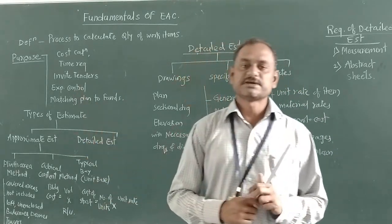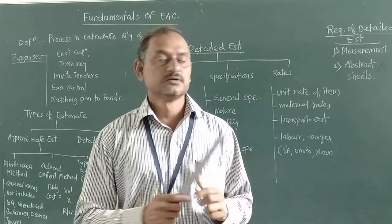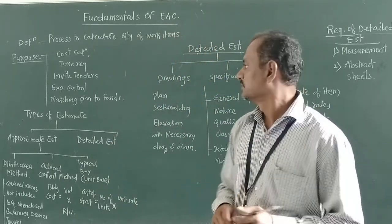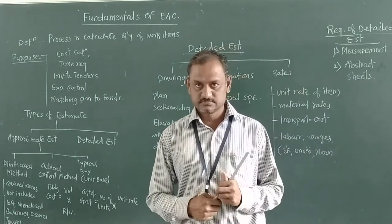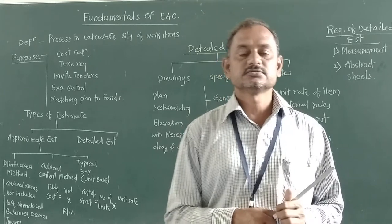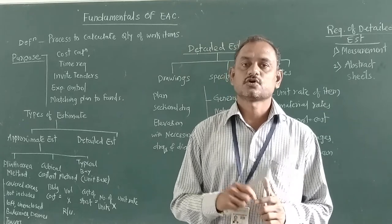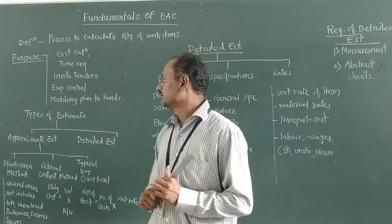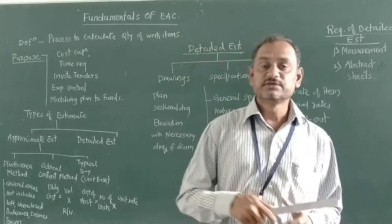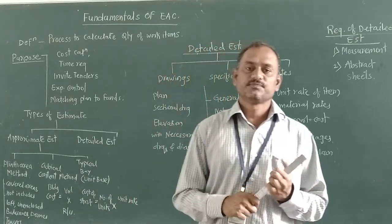Then, expenses control. While we are going to start one building for execution purpose, a number of expenditures and activities are involved. So for the various civil engineering activities, the owners must need various costs to complete that work. That cost should be minimized or controlled by keeping in mind the estimating.